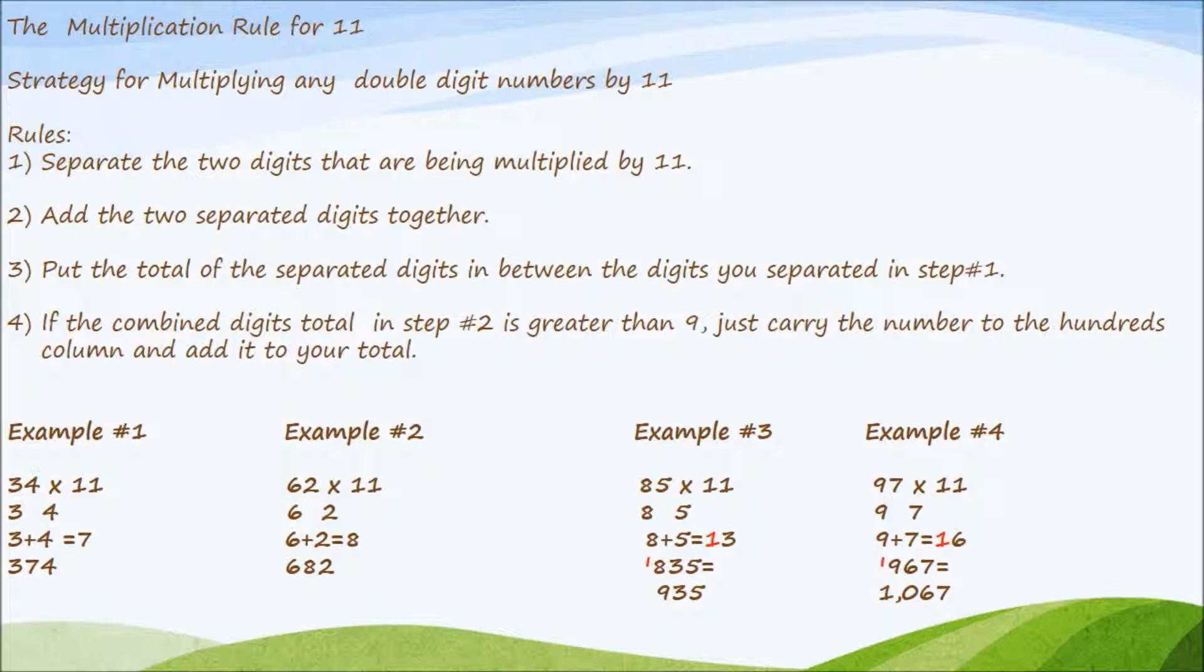And here's our final example. We have 97 times 11. We're going to separate the 9 and the 7. We're going to add 9 plus 7 equals 16. We're going to place that 6 in between the 9 and the 7. We have to carry that 1 over to the hundreds column. We have 9 plus 1 which is equal to 10. Our final answer is 1067.